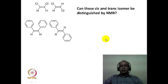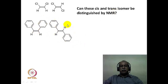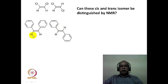Quite often we ask students whether it is possible to distinguish cis and trans isomers using NMR spectroscopy. The immediate answer students give is: yes, by the coupling constant between the two hydrogens. This is a wrong answer, because in these molecules the two hydrogens are chemically and magnetically equivalent and do not split each other at all. What one would see in the spectrum is a singlet for these two hydrogens. There would be no coupling to show whether it is a cis or trans coupling.